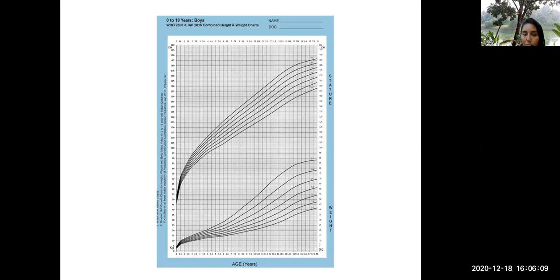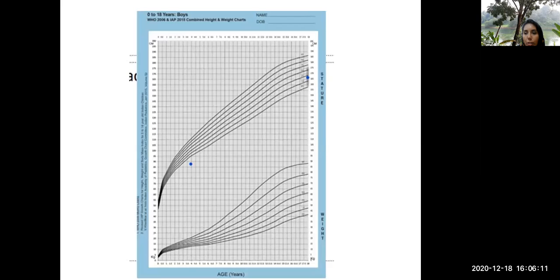So if you see closely at four years, you're plotting, this is what you will get. The height at four years is less than the third percentile. But when you plotted the mid-parental height, that is the blue dot at 18 years, it is not short stature. It is well within the normal range. The child is having height almost at the 25th percentile actually.